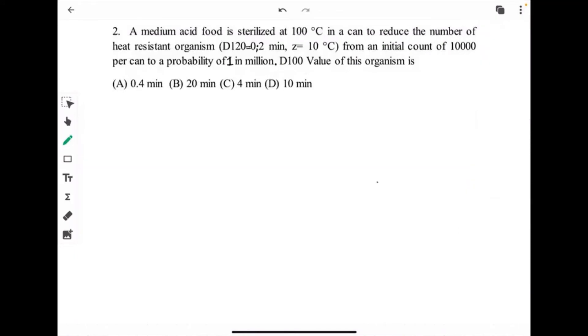The next question is: a medium acid food is sterilized at 100 degree Celsius in a can to reduce the number of heat resistant organism from an initial count of 10 to power 4 per can to a probability of 1 in million. We have to find D 100 degree Celsius value of this organism, but we have given D 120 degree Celsius 0.2 minute.